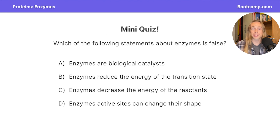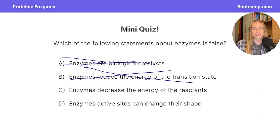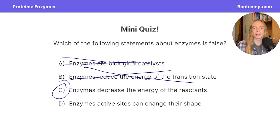Now it's time for a mini-quiz about enzymes. Which of the following statements about enzymes is false? A says an enzyme acts as a biological catalyst — this is true, so we can eliminate it. B says enzymes reduce the energy of the transition state — since the top of the activation energy curve represents the transition state, a decrease there means decreased activation energy, so this is true. C says enzymes decrease the energy of the reactants — enzymes do not change the energy of reactants or products, so this looks false. D says enzyme active sites change their shape, which is true via the induced fit theory. This solidifies C as the false answer: enzymes cannot decrease or increase the energy of a reactant or product.